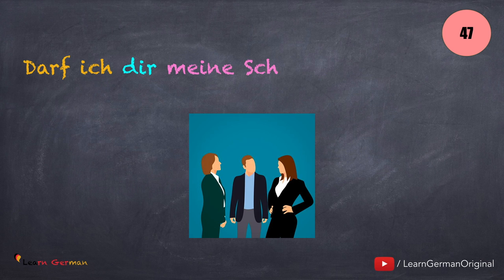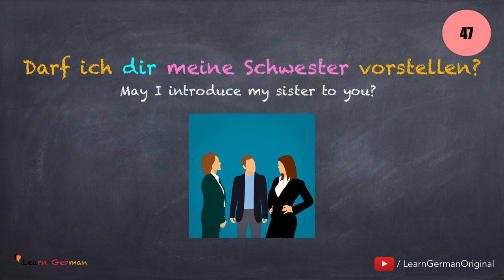And here is the next sentence: Darf ich dir meine Schwester vorstellen? In this case, since both objects are persons, you will say jemanden jemandem vorstellen.